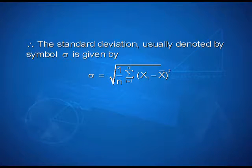Therefore, the standard deviation, usually denoted by sigma, is given by sigma is equal to the square root of 1 upon n into summation i varying from 1 to n of xi minus x bar the whole square. Let us take the following example to illustrate the calculation of variance and standard deviation.